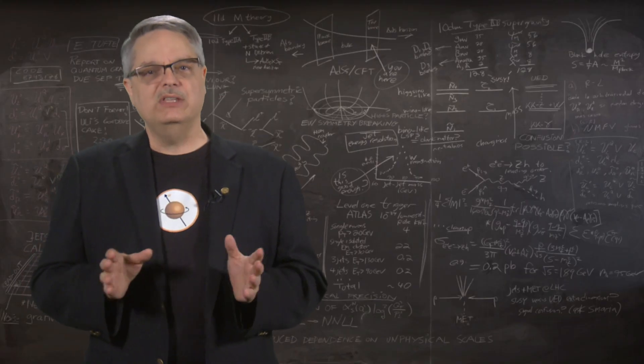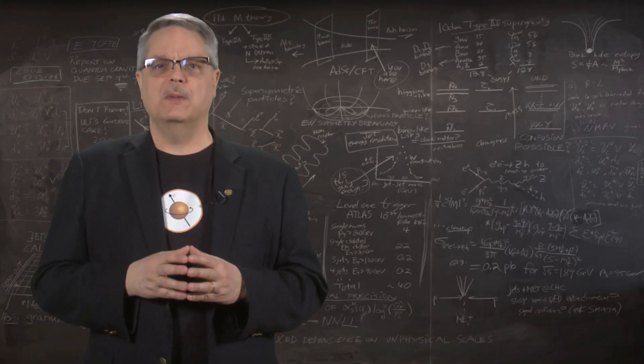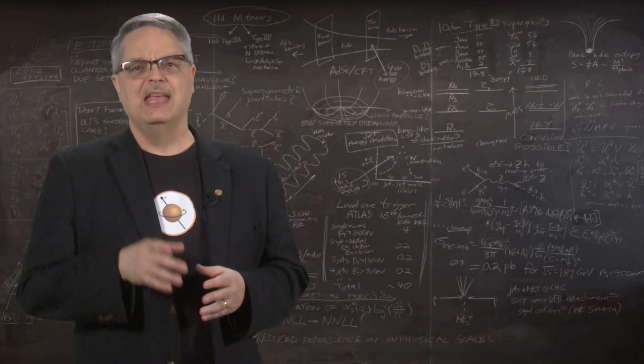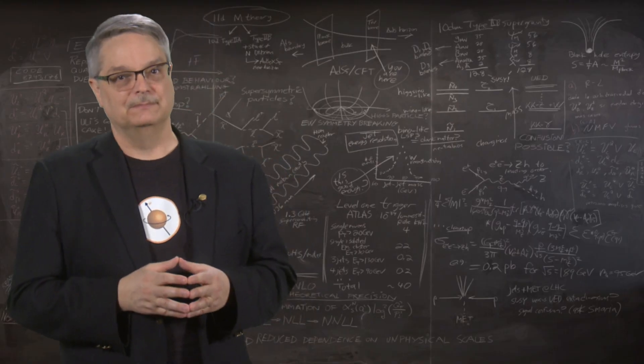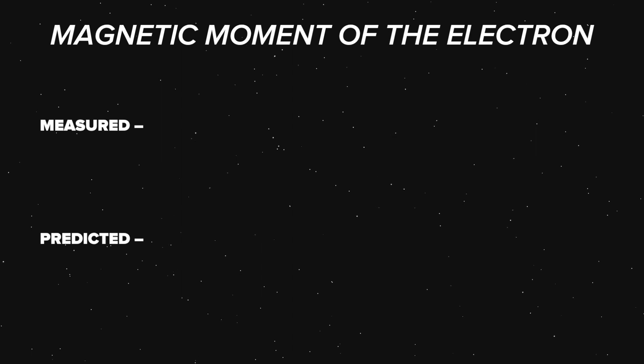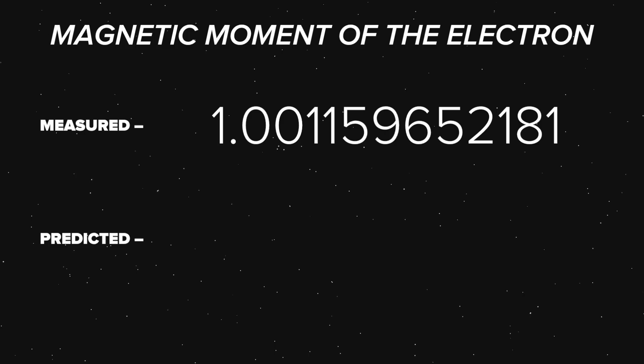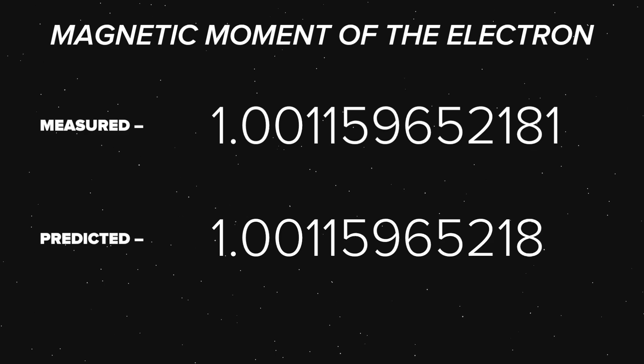1947 was about 70 years ago, and we've improved our experimental and calculational techniques. That means that these days we can test the theory of QED to incredible precision. The current measured value for the magnetic moment of the electron is 1.001159652181, while the predicted value is 1.001159652182.